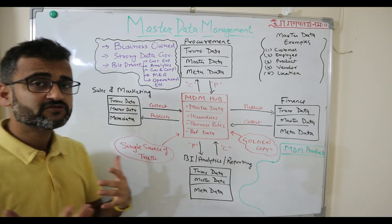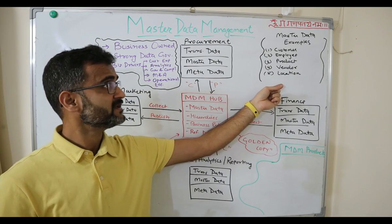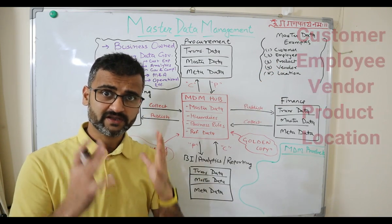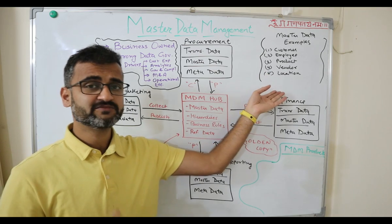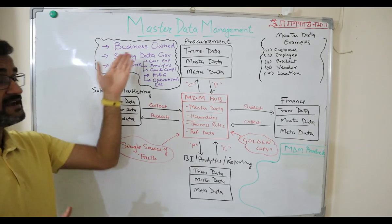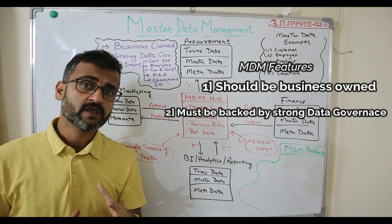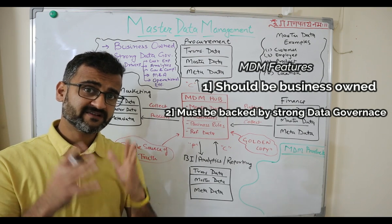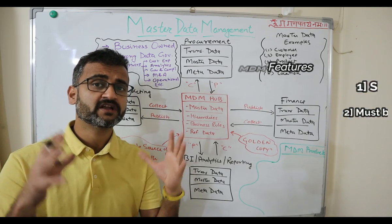Now, what are some features of MDM? First, let's understand some basic MDM entity examples: customer, employee, product, vendor, location, parts — all these kinds of information are considered master data, and they vary from industry to industry. Some features of MDM: first, it has to be business-owned. Second, it has to be backed by strong data governance, because we are talking about maintaining something with high quality, high standards, and stringent business processes. All of this cannot happen without a strong data governance framework, and that is why master data management falls under the purview of your overall data governance system.